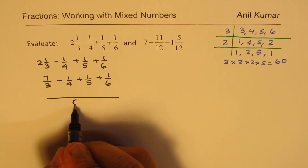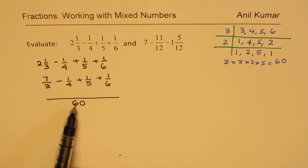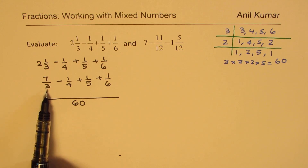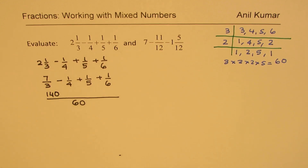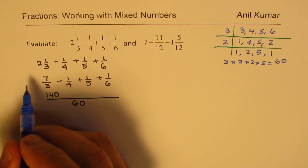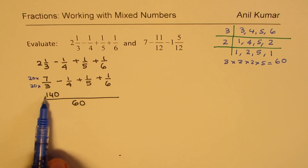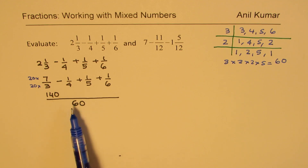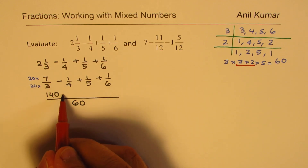So 3 times 2 is 6, times 10 is 60 — giving us 60 as our common denominator. Now I write equivalent fractions with 60 as the common denominator. For 7/3: I multiply by 20, so 20 times 7 gives 140. For ¼: to get from 4 to 60, I multiply by 15 — leaving out the 4, I take 2 × 2 × 5 × 3 = 60, so the factor is 15.